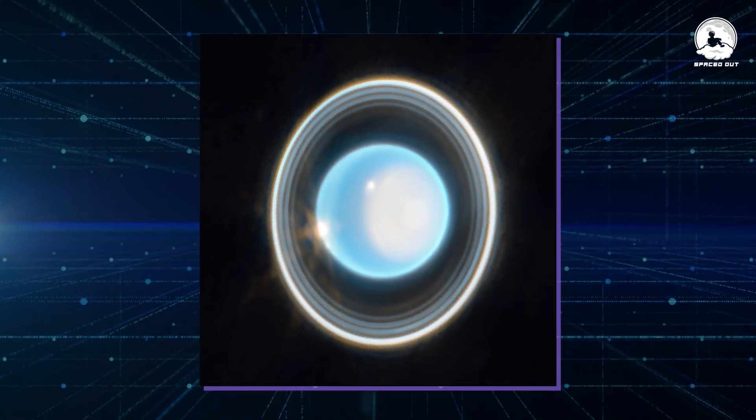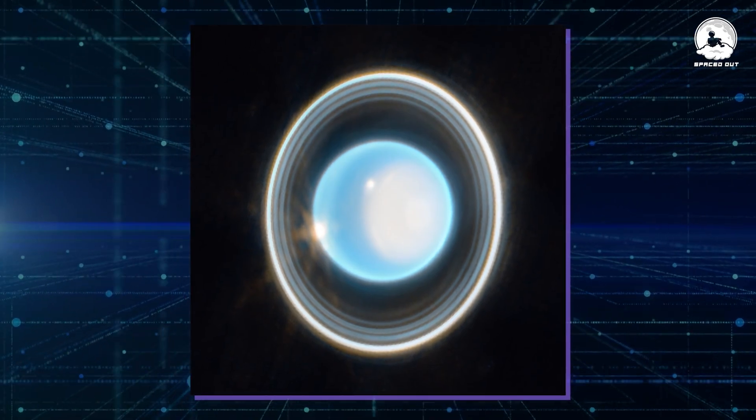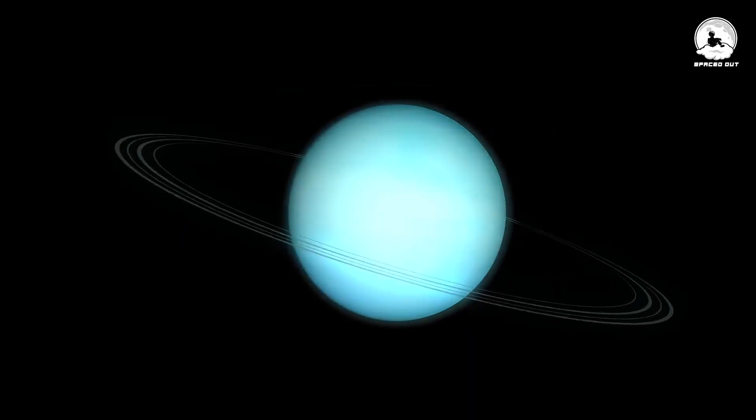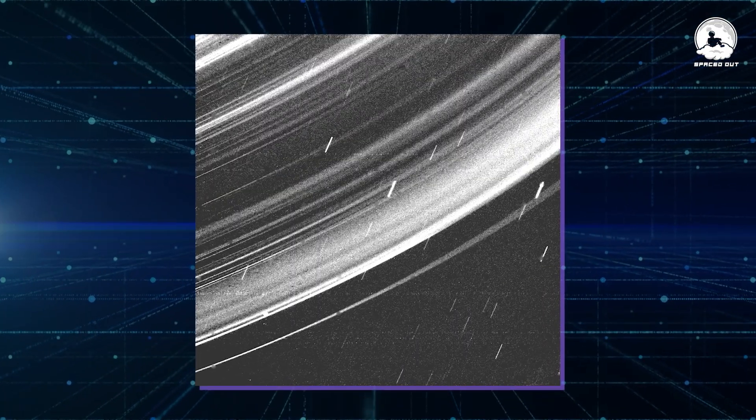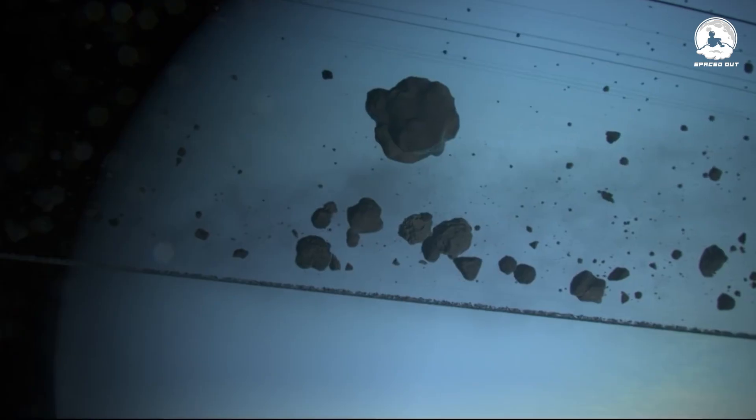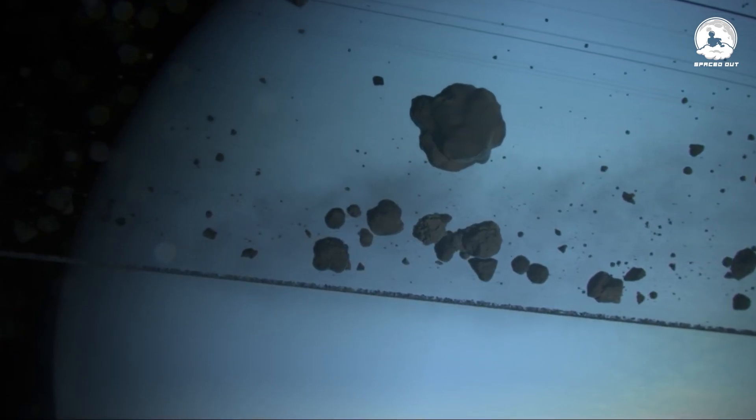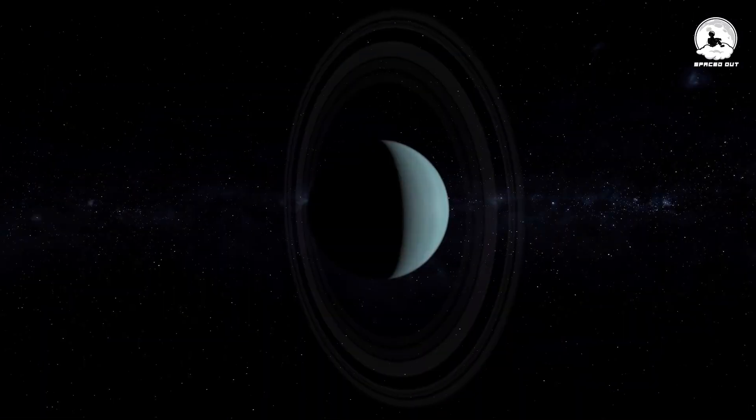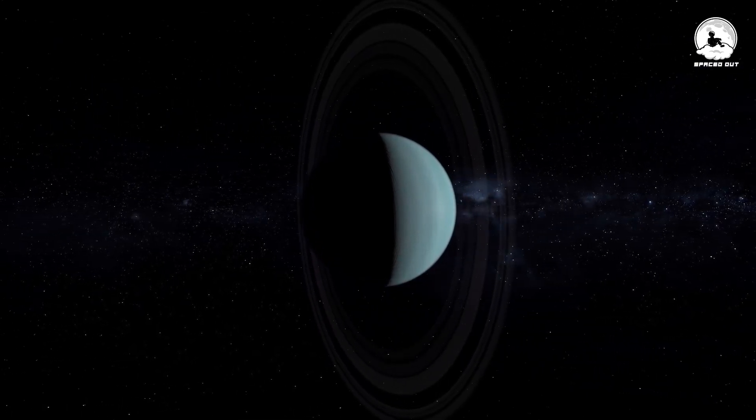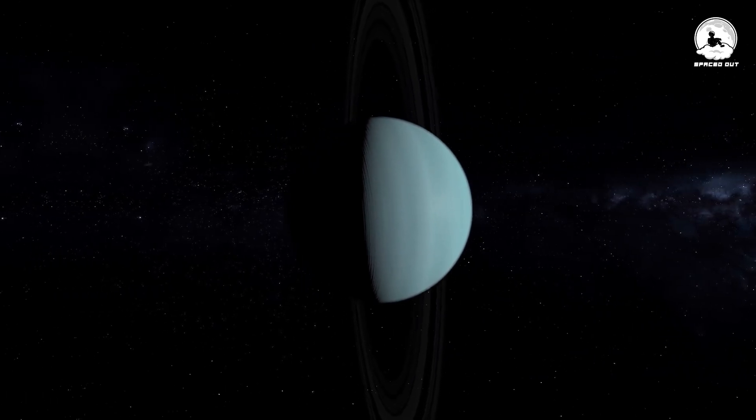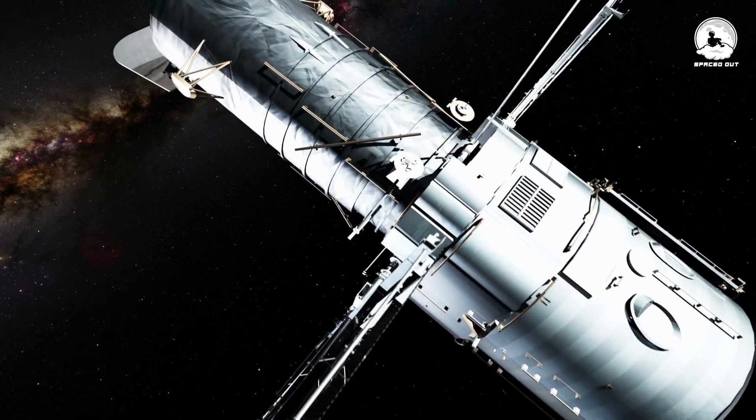This recent snapshot of Uranus reveals a trove of details that were either hidden or barely visible to us before. Let's dive into one of the most noticeable aspects: the rings. Uranus boasts 13 known rings, crafted from a mix of dust and ice particles spanning from tiny microns to more substantial meters in size. These rings are remarkably slim and dark, making them challenging to observe from Earth or even with other space telescopes.